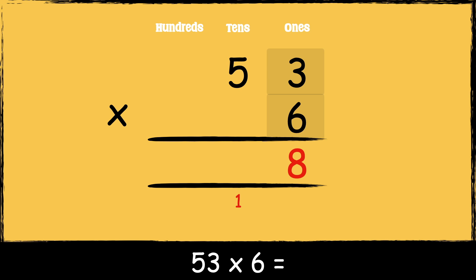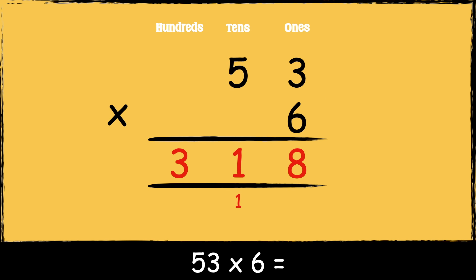Next we need to multiply six by five tens: six times five is thirty. We add the one ten below, so thirty add one is thirty-one. So the answer is three hundred and eighteen.